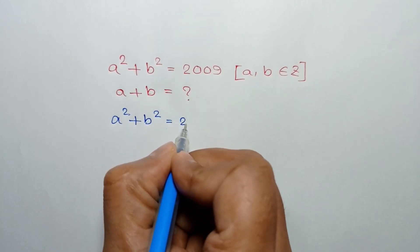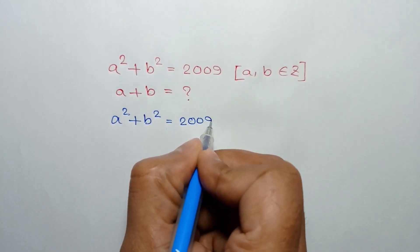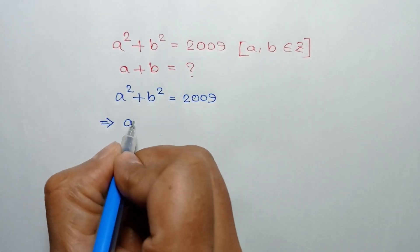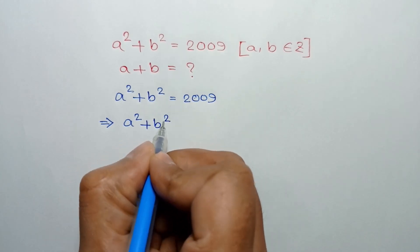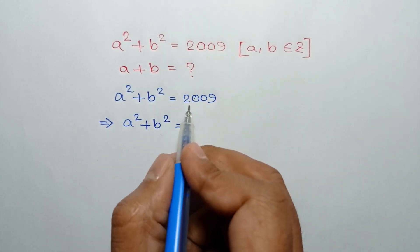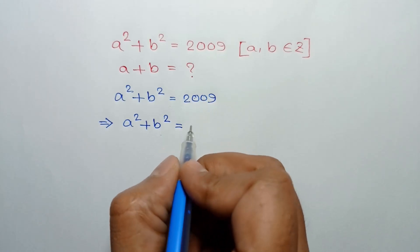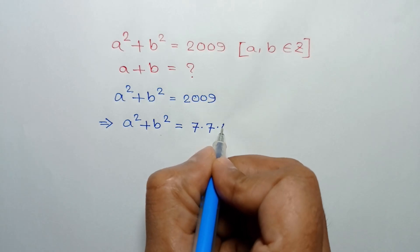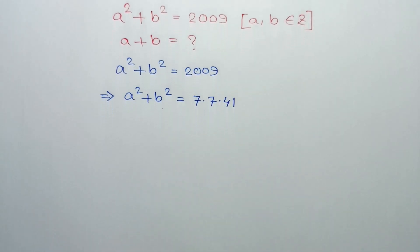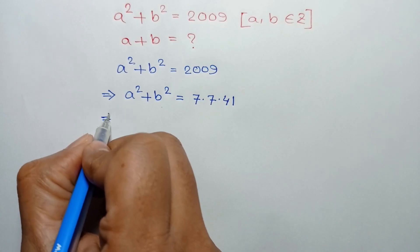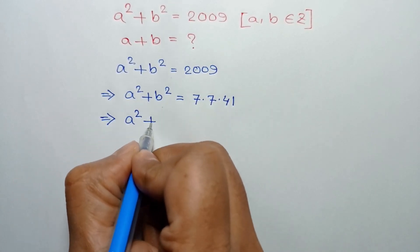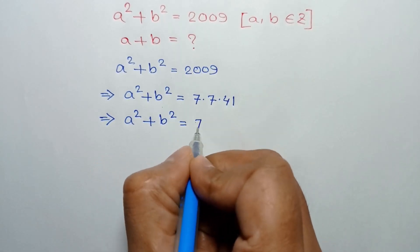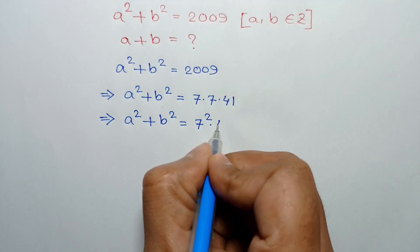We have given A squared plus B squared is equal to 2009. The prime factorization of 2009 is 7 times 7 times 41, so A squared plus B squared is equal to 7 squared times 41.